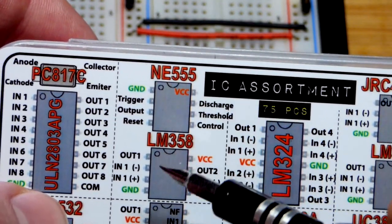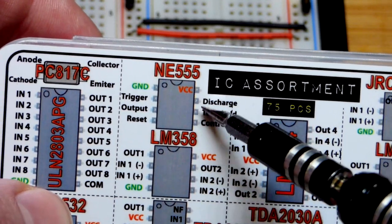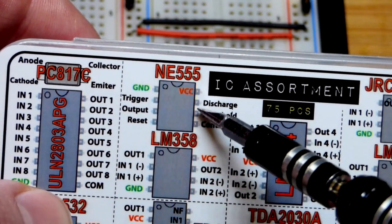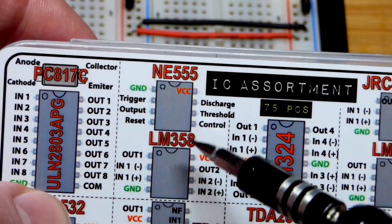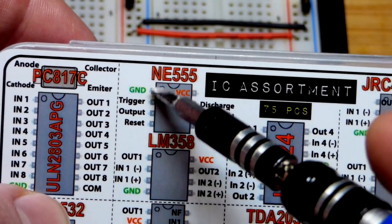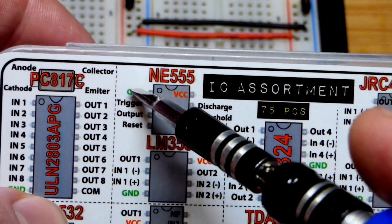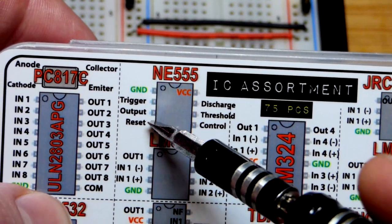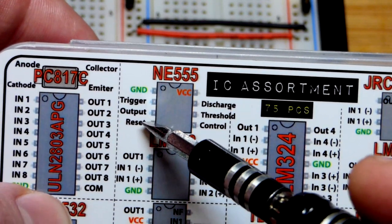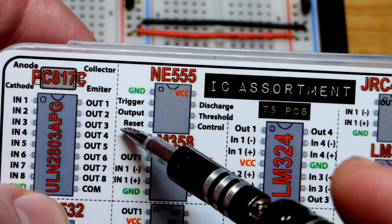This video, we got the NE555. Discharge, threshold, and trigger are tied together with a couple jumpers that give them a direct connection. We have to power the integrated circuit—positive, negative. We're going to put 5 volts across it. Reset has to go to the positive supply to tell it not to do anything.